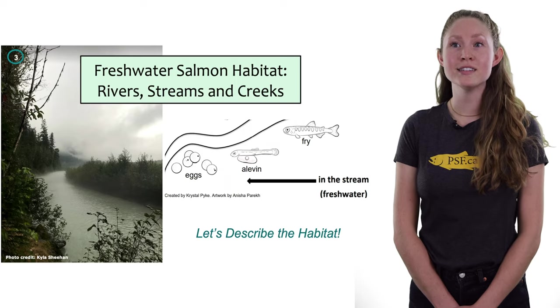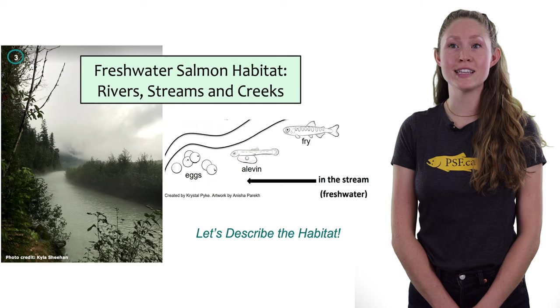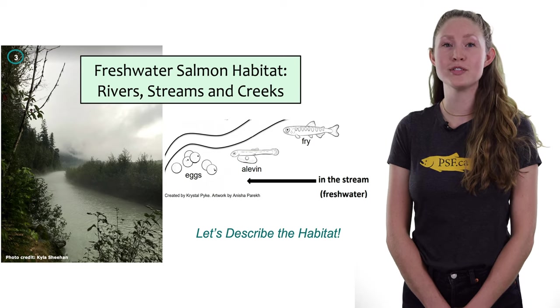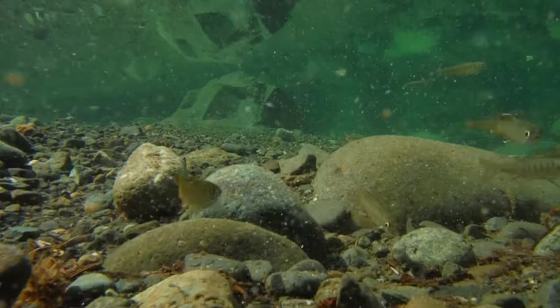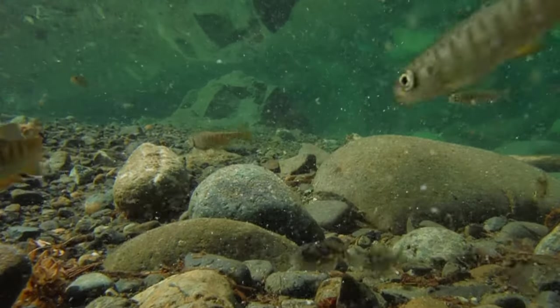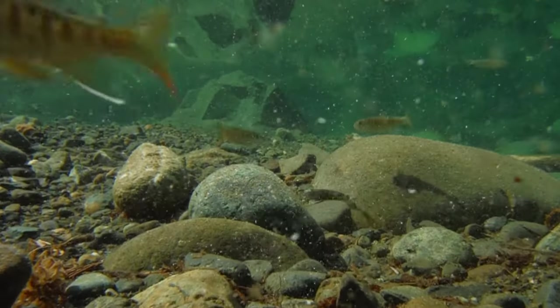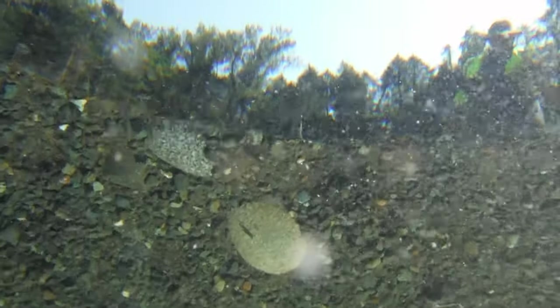In the wild, salmon alevin emerge from their egg sacs in the redds of freshwater streams, rivers, and creeks. They develop and grow into fry during their out-migration to the marine environment. Functioning freshwater habitat is essential for these juvenile salmon to be able to make it to the marine environment and to their next life stage.